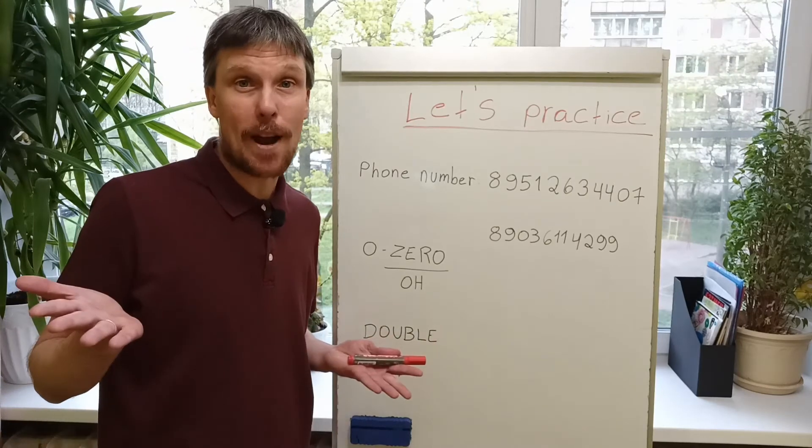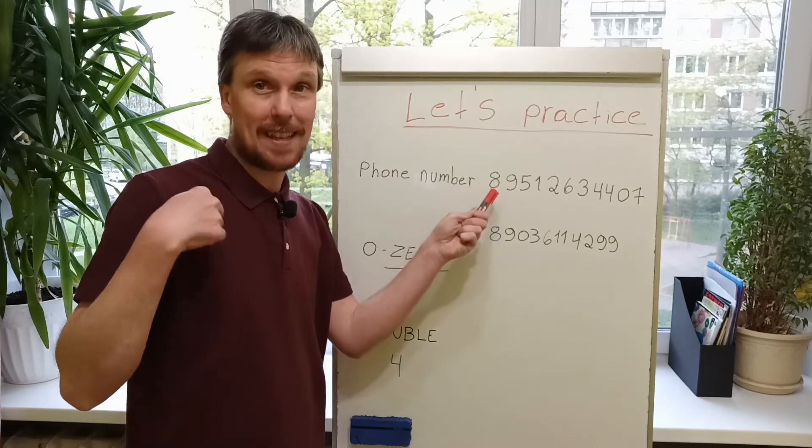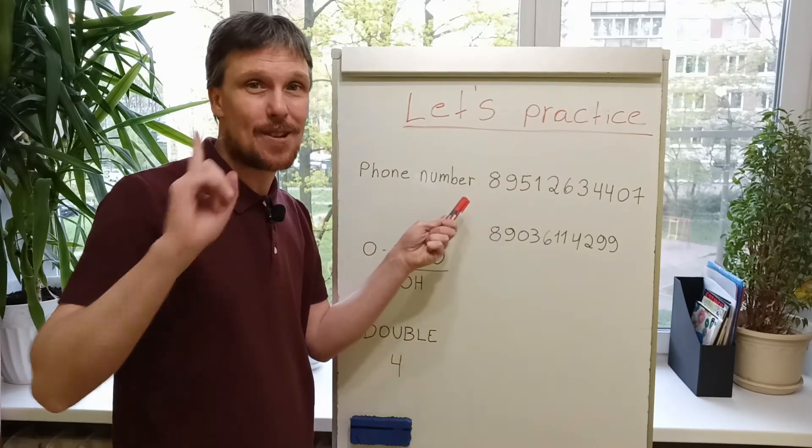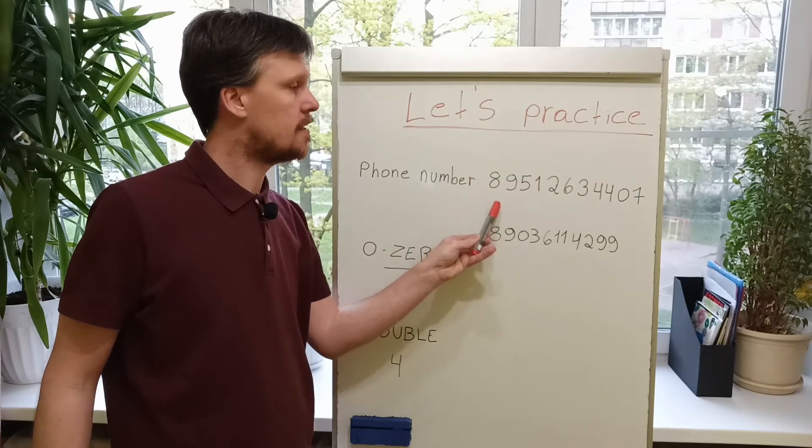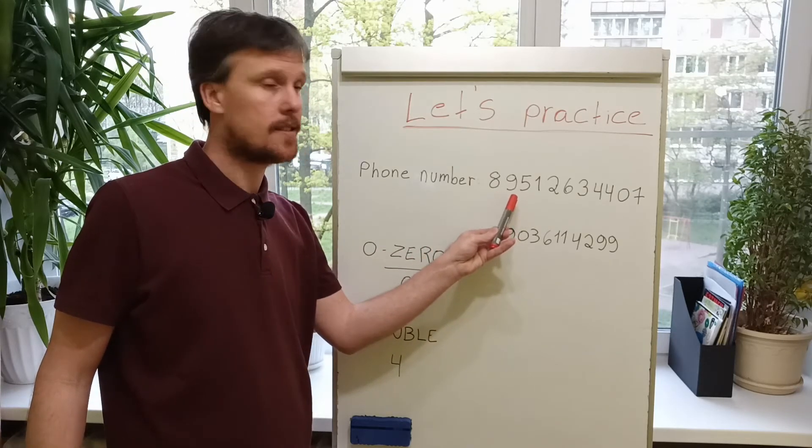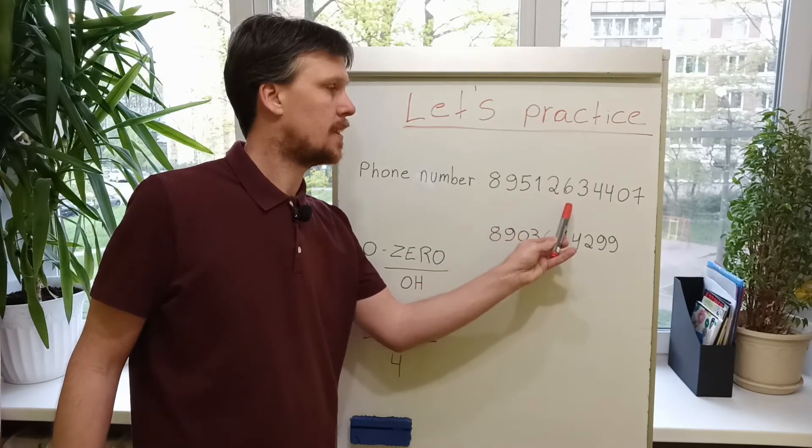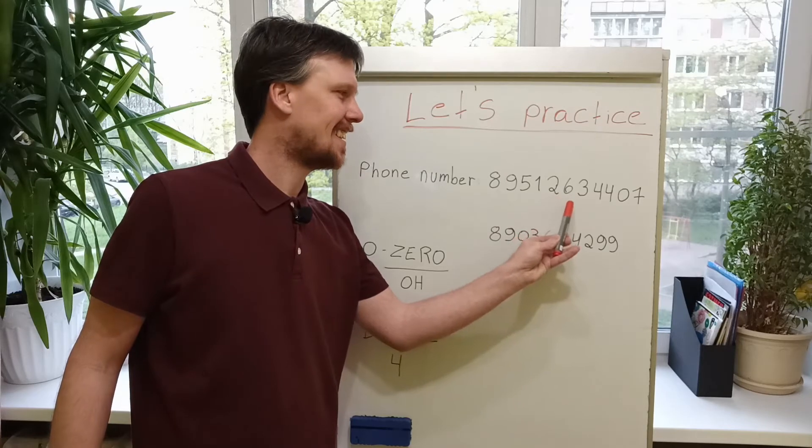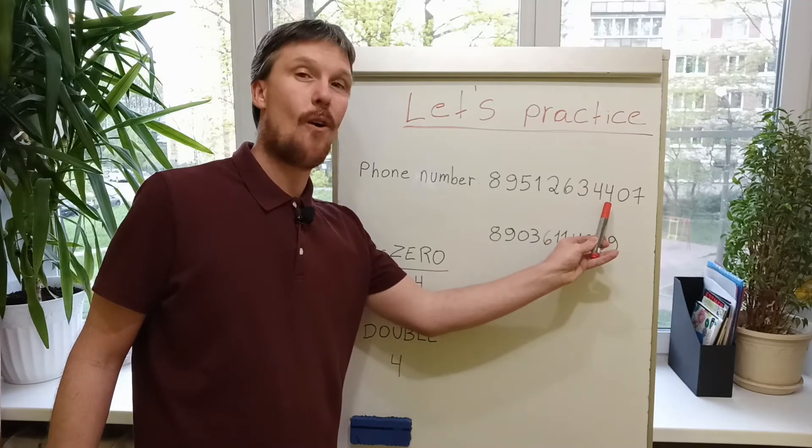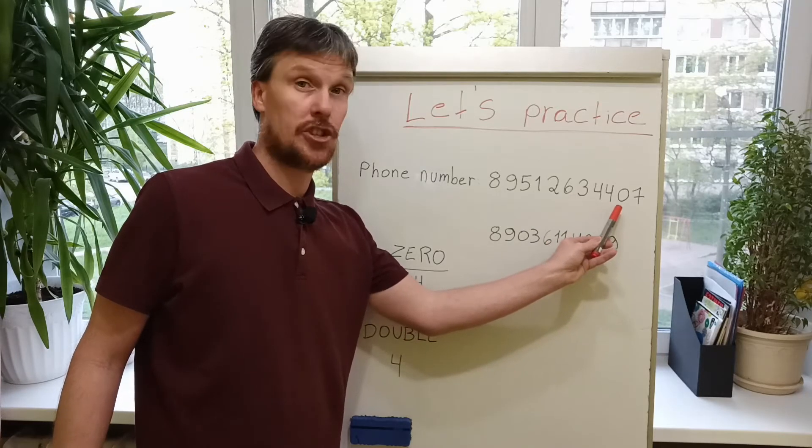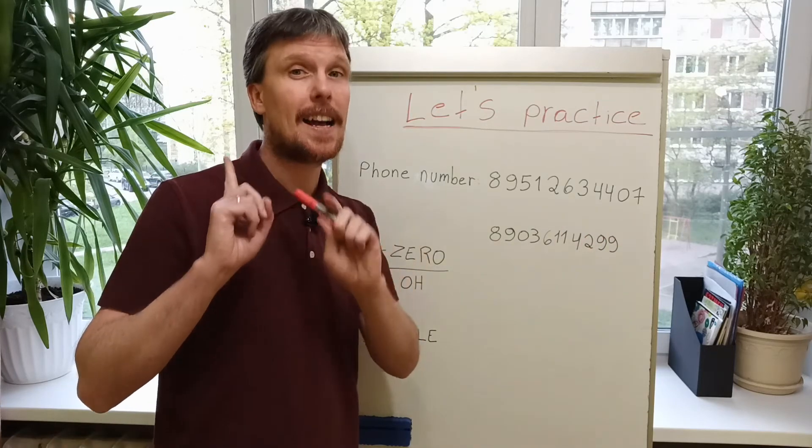Let's practice! Let's practice with phone numbers. This is my phone number. Repeat. Eight. Nine. Five. One. Two. Six. Three. Four. Four. Zero. Seven. Very good! Attention!